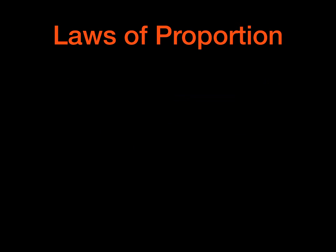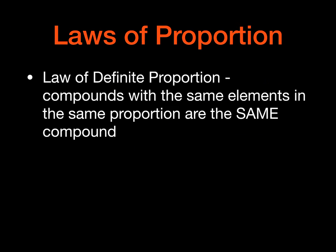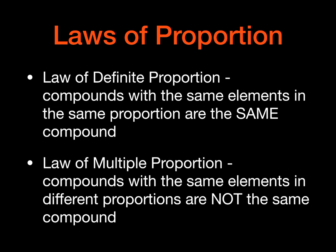So we have some laws of proportion in chemistry. And the first law is the law of definite proportion. And it states that compounds with the same elements in the same proportions are the same compound. And the law of multiple proportions says that compounds with the same elements in different proportions are not the same compounds.